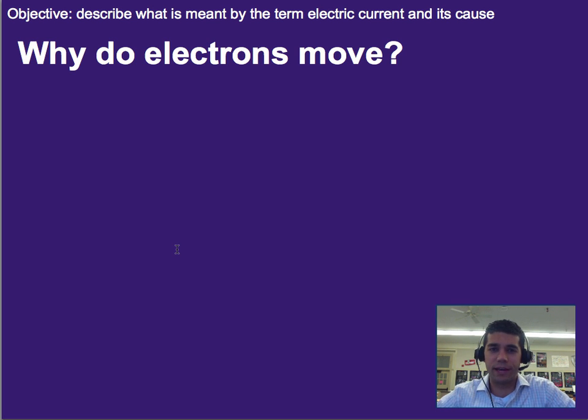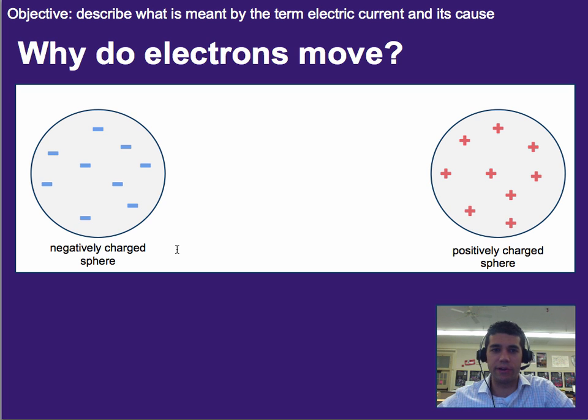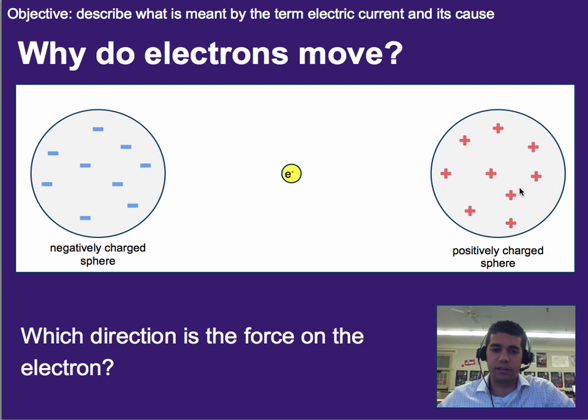But that brings me to the point of, if moving charge is electricity, why do electrons move? Like, what causes them to move? Well, let's imagine the scenario here. We've got a negatively charged sphere, and we've got a positively charged sphere. And if we place an electron in between those two, what direction is the force on the electron? Take a second to think about it.